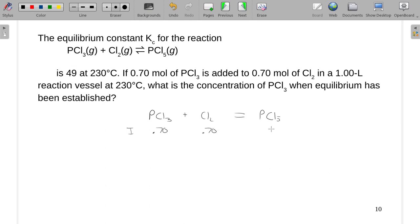And since it doesn't mention anything about the phosphorous pentachloride, we assume it's none, which guarantees this is going forward. So at equilibrium, this would be 0.70 minus X. This would be 0.70 minus X. And this is just X.